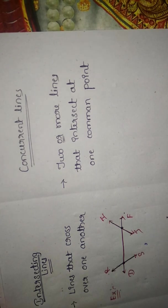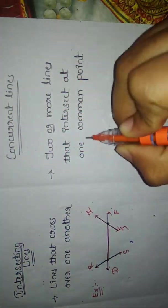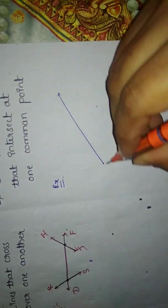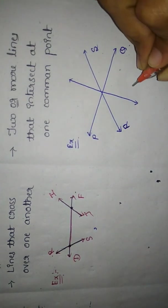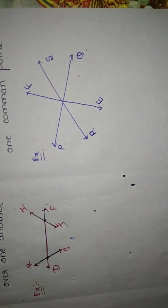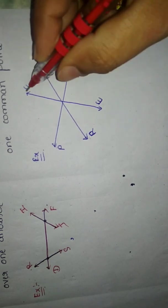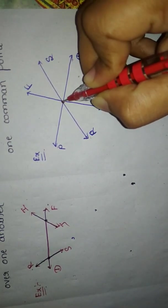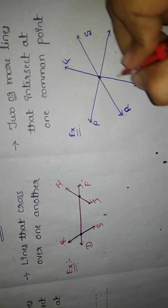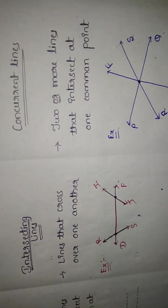One more type is concurrent lines. The definition: two or more lines that intersect at one common point. For example, if I take three lines — RS, PQ, and EF — these three lines are meeting at one common point. They are crossing each other with only one common point, and such type of lines are called concurrent lines.